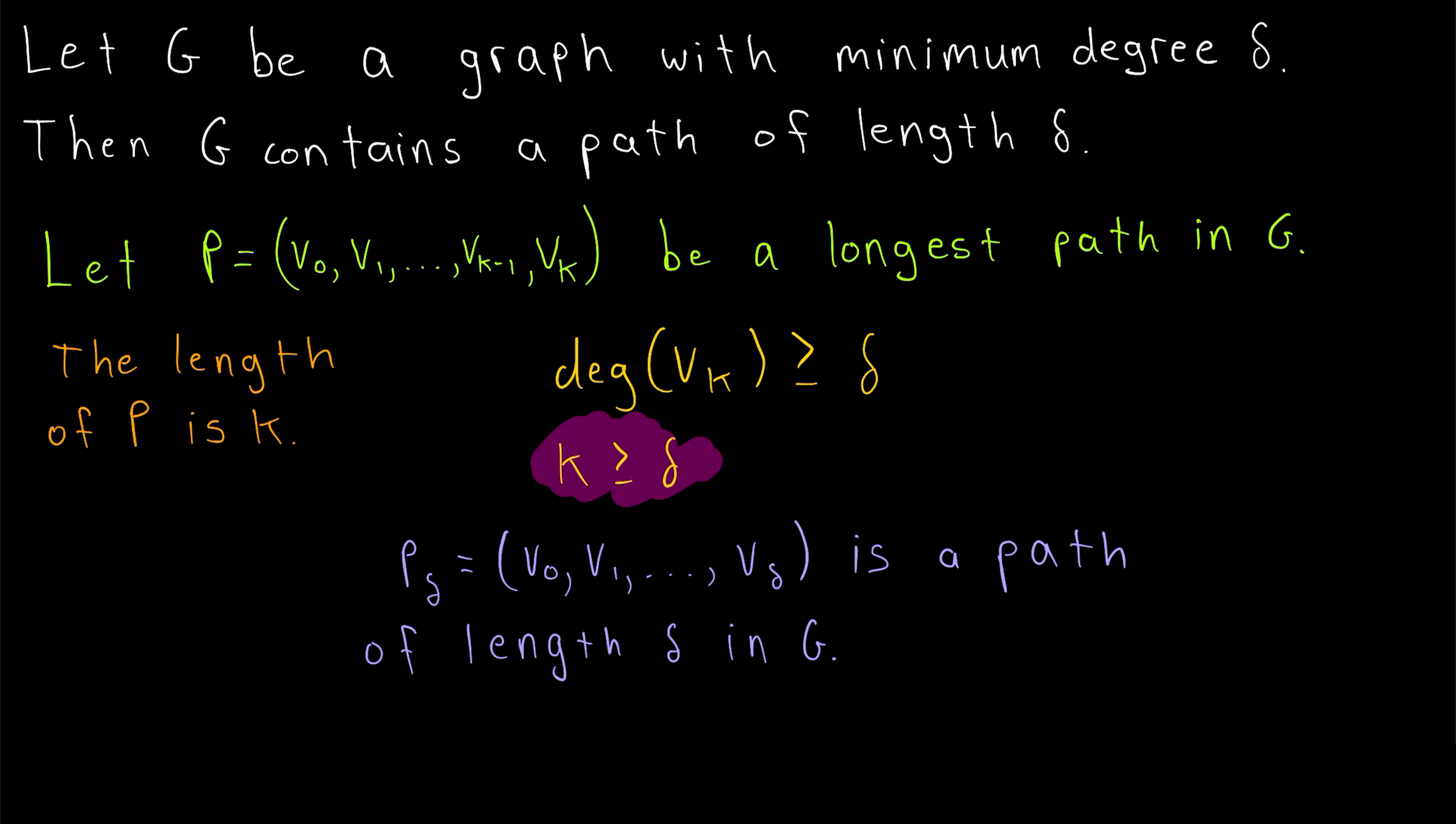Once more, since we know the length of our path P is at least delta, it may be the case that the length of P is delta, in which case we're done. P is our path of length delta. Otherwise, just take a subpath of P with length delta. We would just take the first delta plus 1 vertices from P, and that would be our path of length delta.